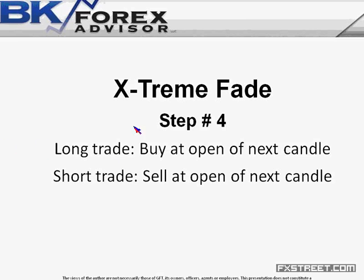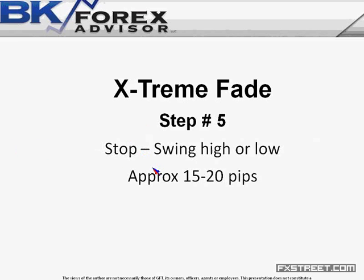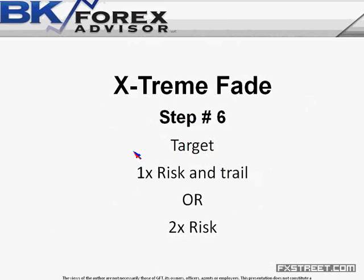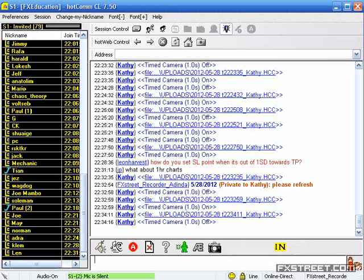When it's coming from an uptrend, we're going to sell at the open of the next candle. Stop is set at swing high or swing low — usually about 15 to 20 pips. Your target would be 1 times risk and trail to stop, or 2 times risk. Let's get back to our live chart to see some examples.